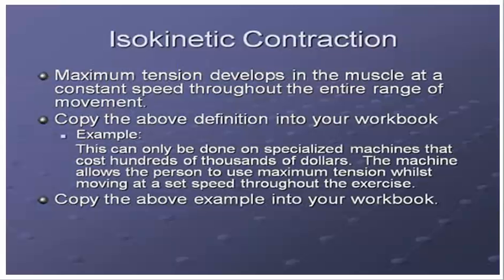Isokinetic — this is what you do on some fancy machines you can get in gyms. These isokinetic machines are very expensive. You push against them and the machine actually pushes back against you, so you work at your maximum tension throughout. On the pec deck for example, the harder you pull, the harder the machine pushes back. Same with the leg press or chest press — your muscle is constantly working at the highest maximum tension possible.